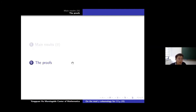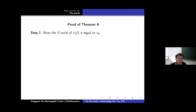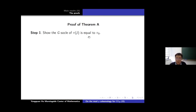From now on, I will explain the proofs. Let's first look at the proof of Theorem A. The first step is to show that the G-socle of π(ρ̄) is equal to π_0. We already saw the conjectural form of π(ρ̄) — it has a unique socle filtration π_0, π_1, π_2 — so the first step is to show the socle is just π_0.